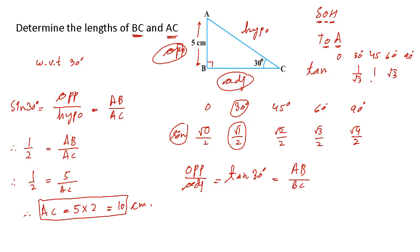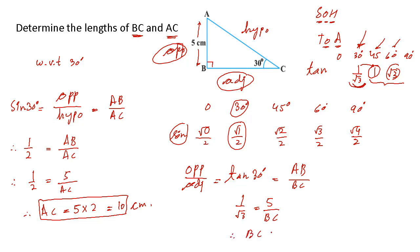A trick to memorize: if you remember tan 30° = 1/√3, then 45° and 60° come for free — the numerator goes on top and denominator goes down, giving 1 and √3 respectively. So tan 30° = 1/√3. This equals 5 centimeters divided by BC. Therefore BC equals 5 multiplied by √3 centimeters. That's the answer for BC and AC. Let's move to the next example.